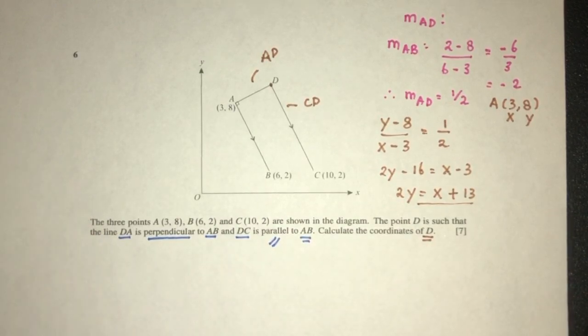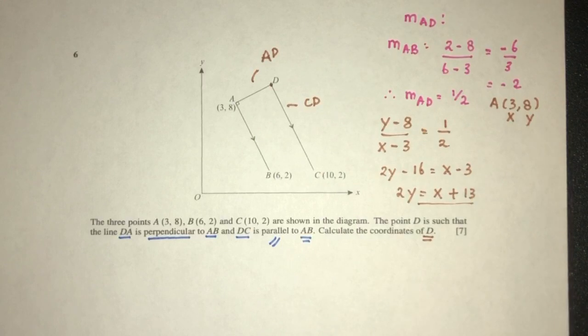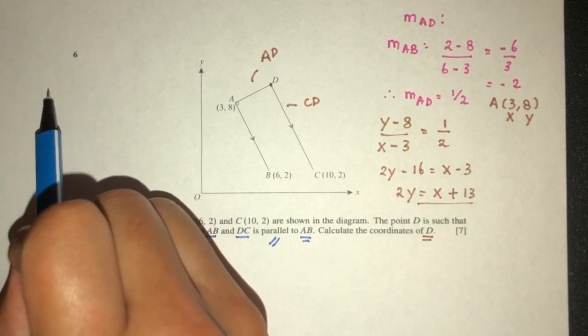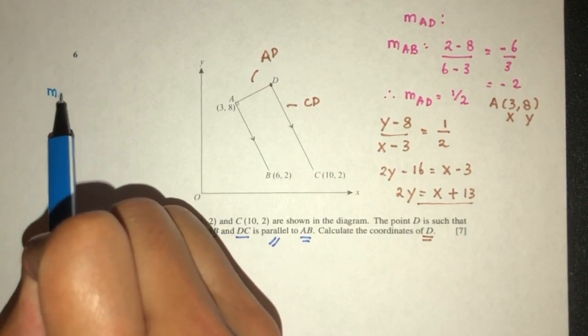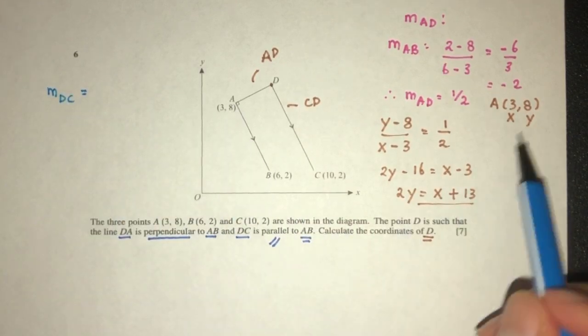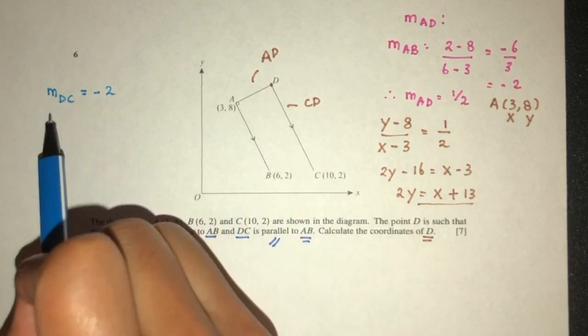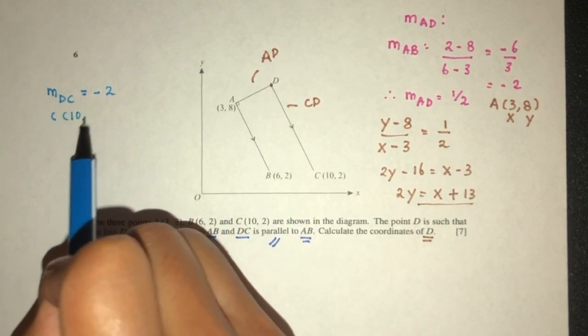Now we have to find the equation of the line CD. Obviously, we have to first find the gradient. Since the line AB and the line DC are in the same direction, we understand that the gradient of the line DC has to be the same as the one with AB, which is minus 2.